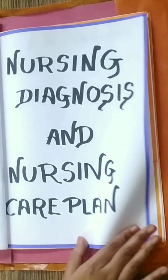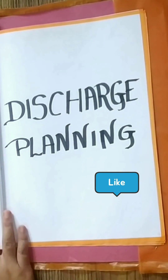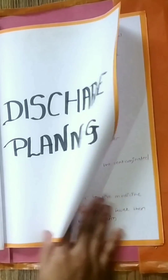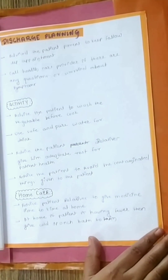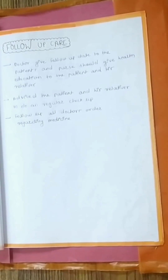After that, you have to write down the nursing diagnosis and nursing care plan related to that specific condition, in the format of: assessment, nursing diagnosis, goal, planning, implementation, rationale, and evaluation. Then discharge planning — that is, after discharge, at-home care and follow-up care.